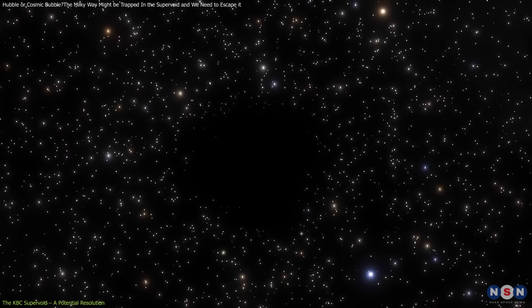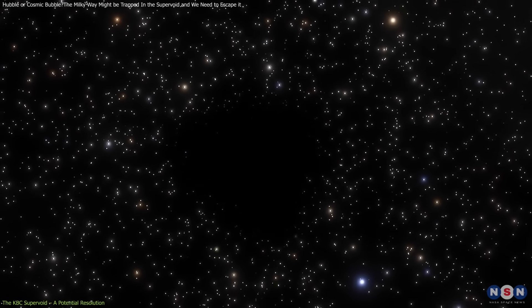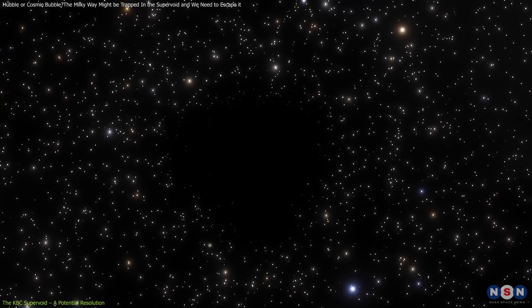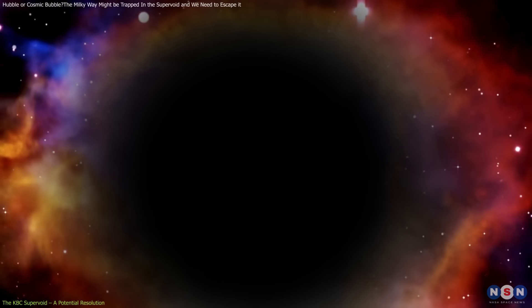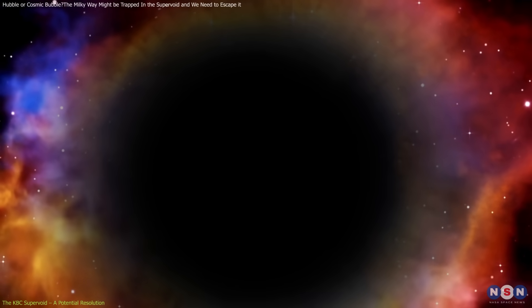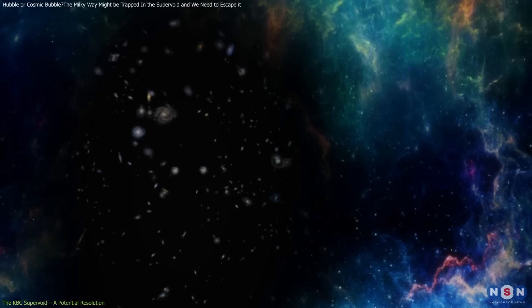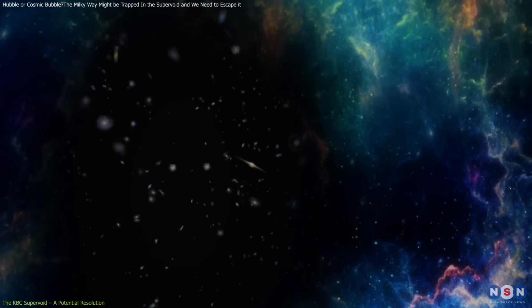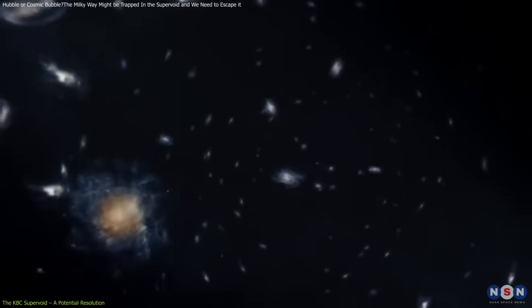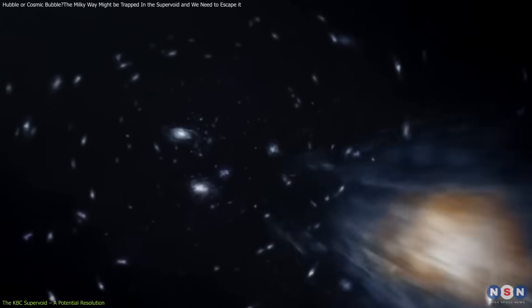Supervoids like the KBC affect nearby galaxies in a unique way. Because they are underdense, they exert less gravitational pull, creating a negative mass effect. This repulsive influence alters the redshifts of galaxies within the void, making them appear to recede faster than they actually are.